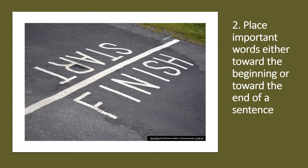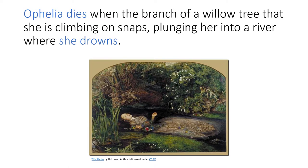Guideline 2: Place important words either toward the beginning or toward the end of a sentence. Beginnings and endings are critical moments in both the composition of an essay as well as at the sentence level. Essays and paragraphs should always begin by identifying their subject and should end with a remark that provides a sense of closure and completion. The same is true of sentences, which should begin with a subject and ideally should end with a strong word or phrase that contains the oomph of the sentence and, possibly, propels it forward into the next sentence.